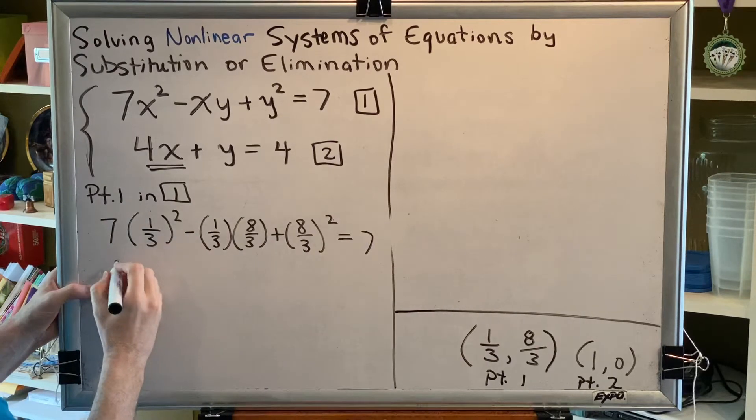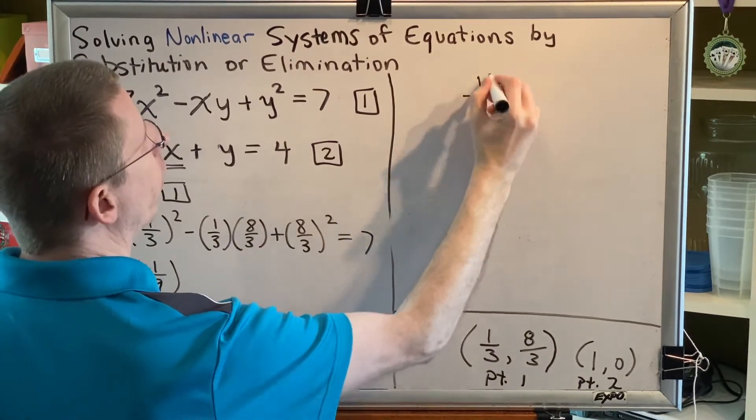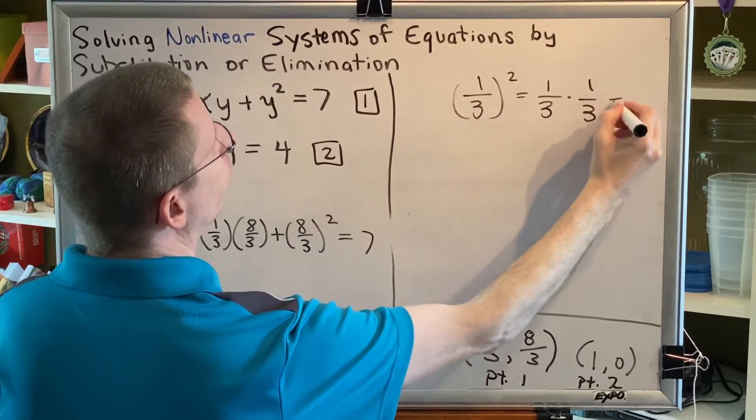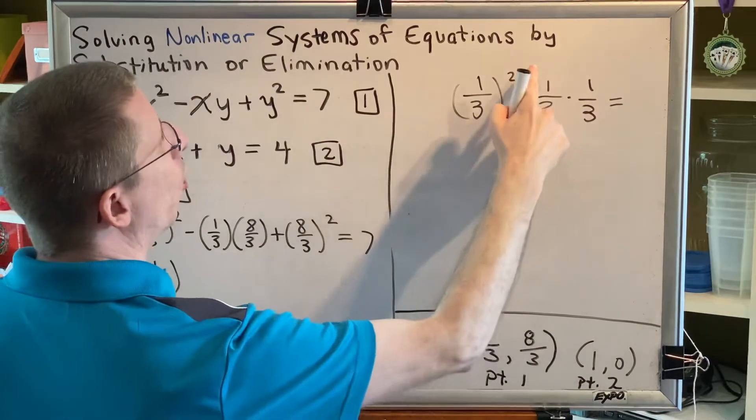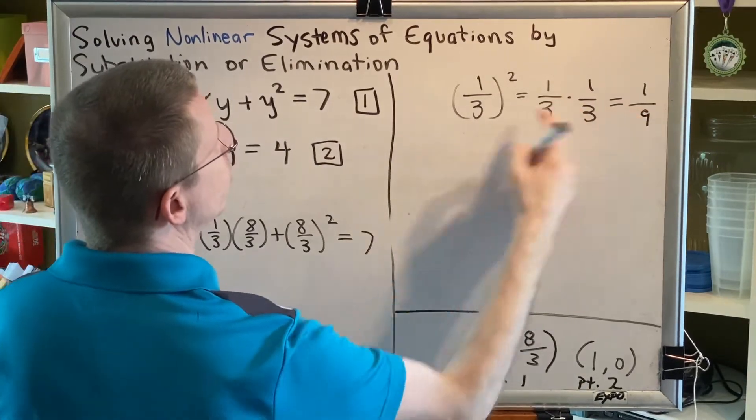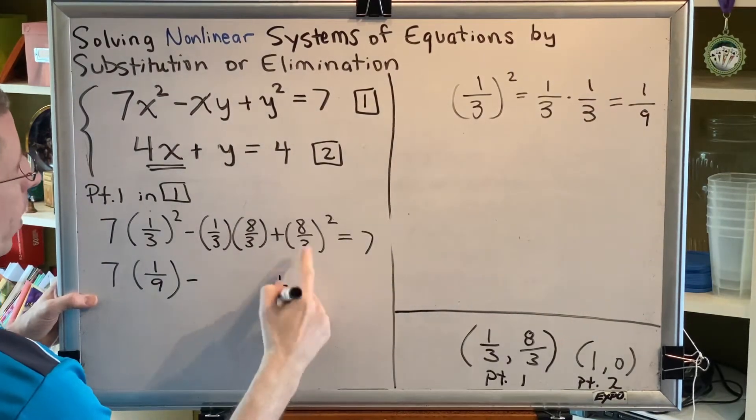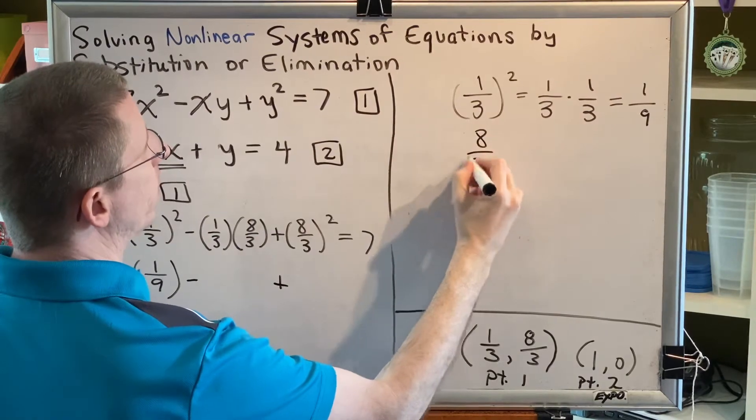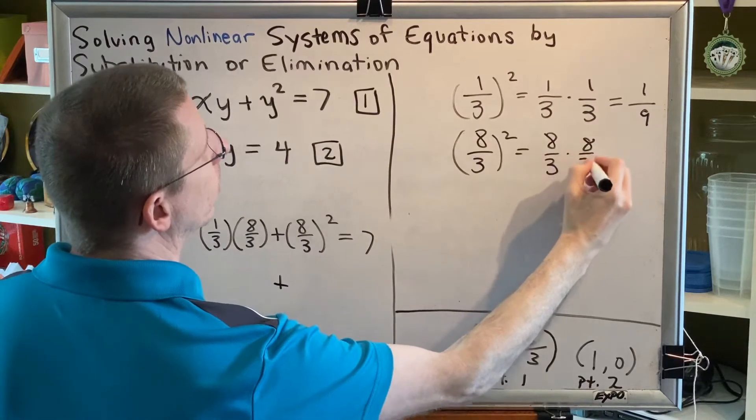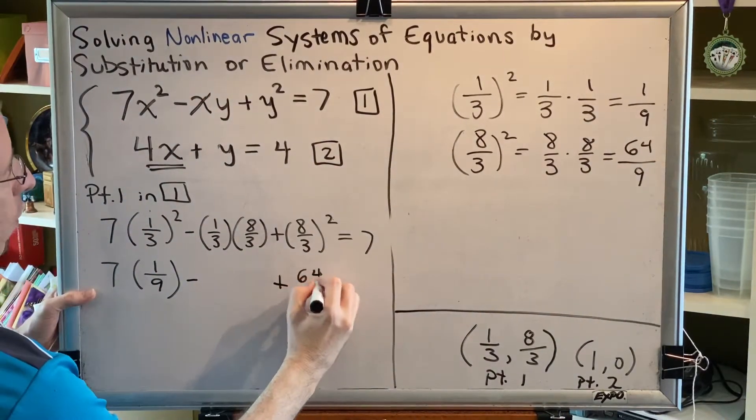Exponents come first with the order of operations and one-third times one-third is one-ninth. One-third squared is the same thing as one-third times one-third. The rule for multiplying fractions is multiply across the top, one times one is one, and multiply across the bottom, three times three is nine. So one-third squared is one-ninth. We've got another exponent, eight-thirds squared. Eight times eight, sixty-four. Three times three, nine. So this is going to be sixty-four-ninths.